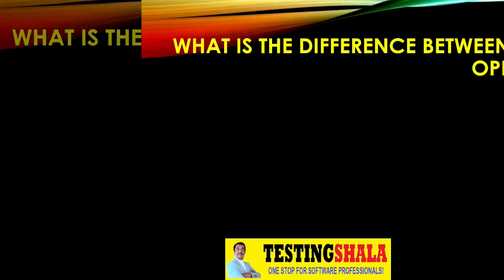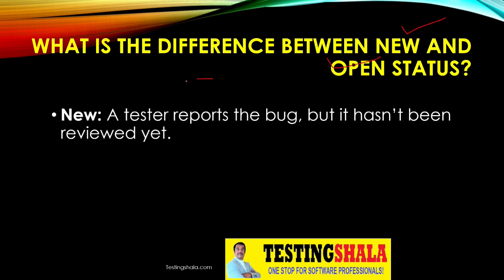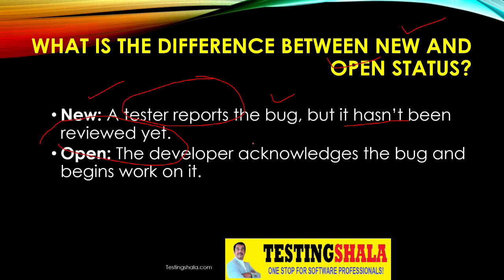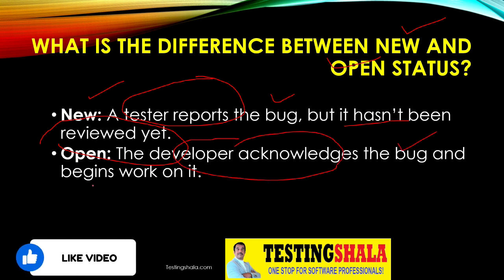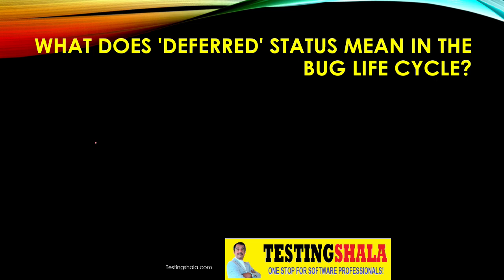Now let us understand the difference between new and open defect status. New is when a tester reports a bug and it has not been reviewed yet. Open is when the developer acknowledges the bug and begins to work on it — that is when the bug status becomes open.